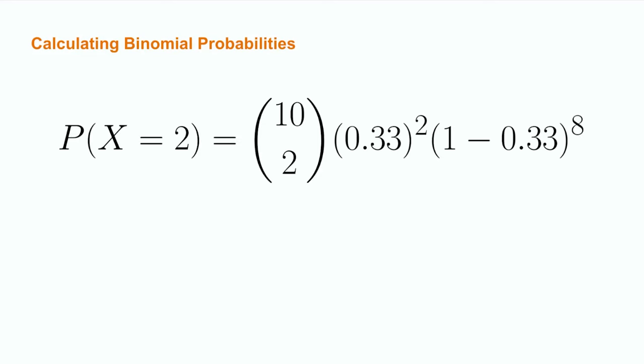We now have all the tools to see whether or not it is unfair that we observed two successes out of 10 trials. Calculating the probability that the binomial random variable x is equal to 2 across 10 trials with a probability of success equal to 0.33 leads to the equation 10 choose 2 times 0.33 raised to the second times the quantity 1 minus 0.33 raised to the eighth.